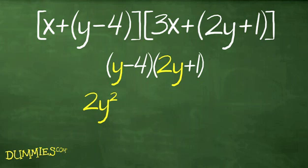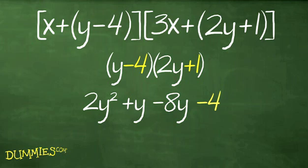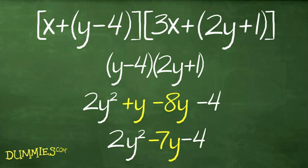First, multiply the first terms. Second, multiply the outer terms. Third, multiply the inner terms. Fourth, multiply the last terms. Fifth, write the results in order. And then combine the like terms.